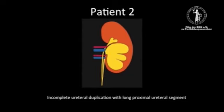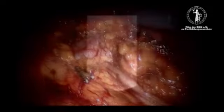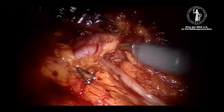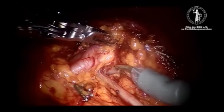Similarly to the previous patient, a UPJO was diagnosed in this 30-year-old male with chronic left-sided flank pain. Retrograde examination shows a duplex kidney with incomplete ureteral duplication and a lower pole UPJO, in this case with a long proximal ureteral segment. A crossing lower pole artery and a concomitant vein were identified as the cause of the lower pole UPJO.